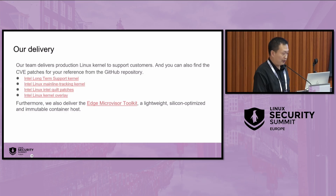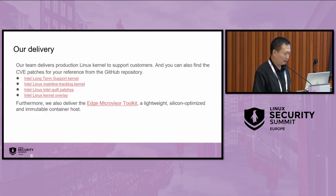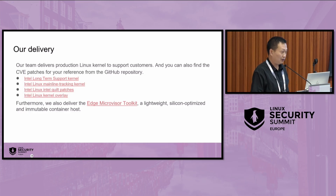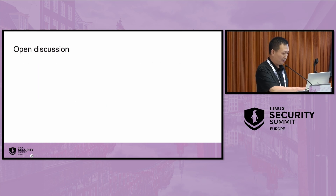This is our delivery. We deliver a production-use kernel to customers, with many out-of-tree patches integrated. All Edge Computing Group (ECG) customers can use it. We also have the Azure Microvisor Toolkit — a lightweight, optimized, and immutable container host small OS.